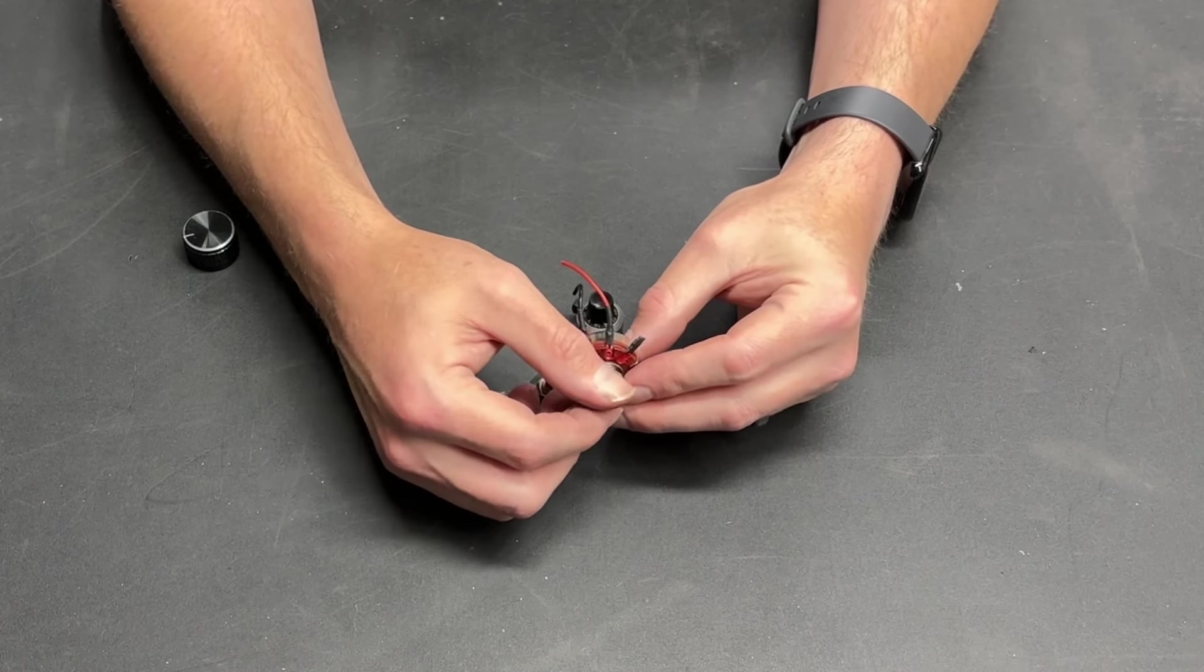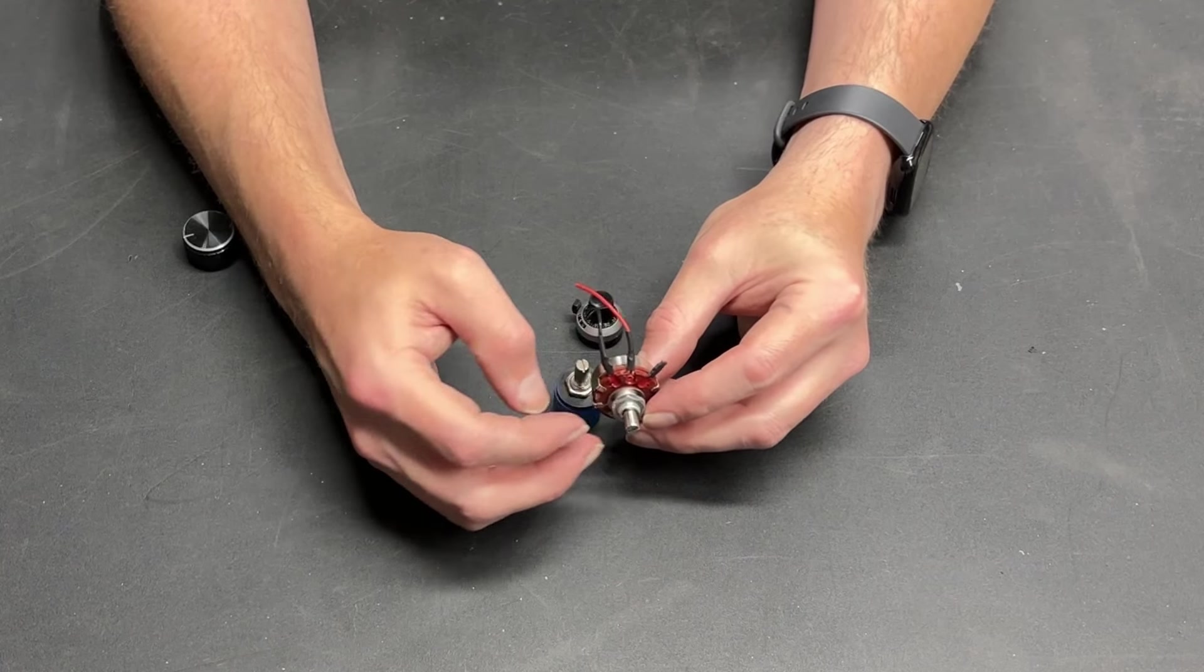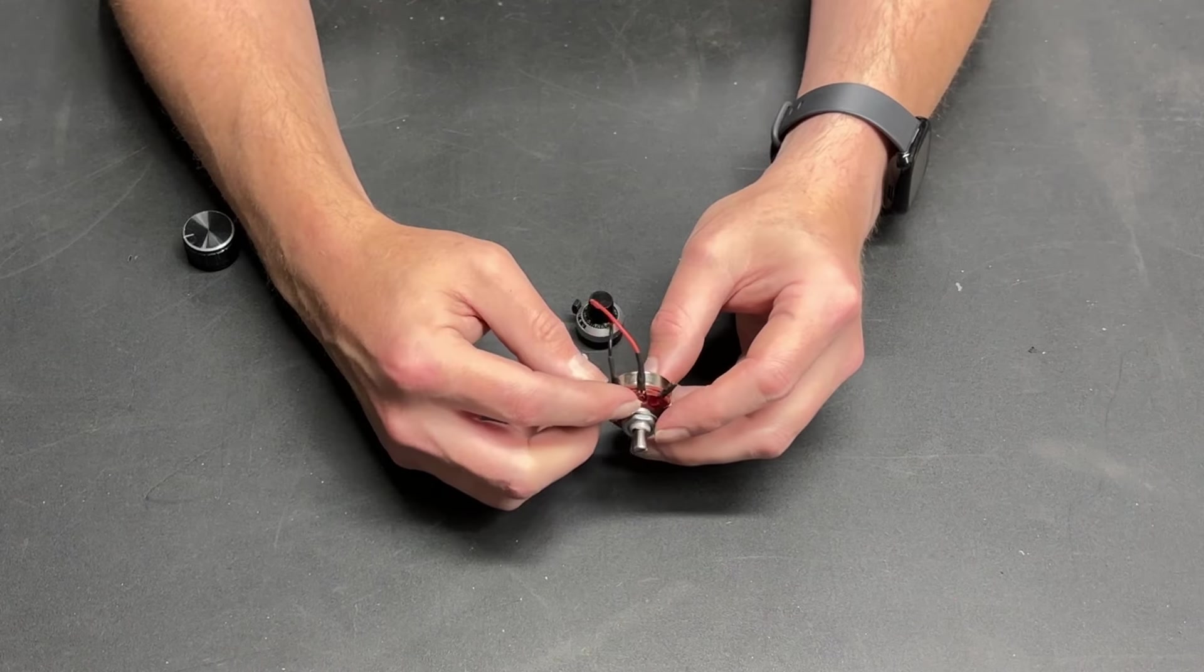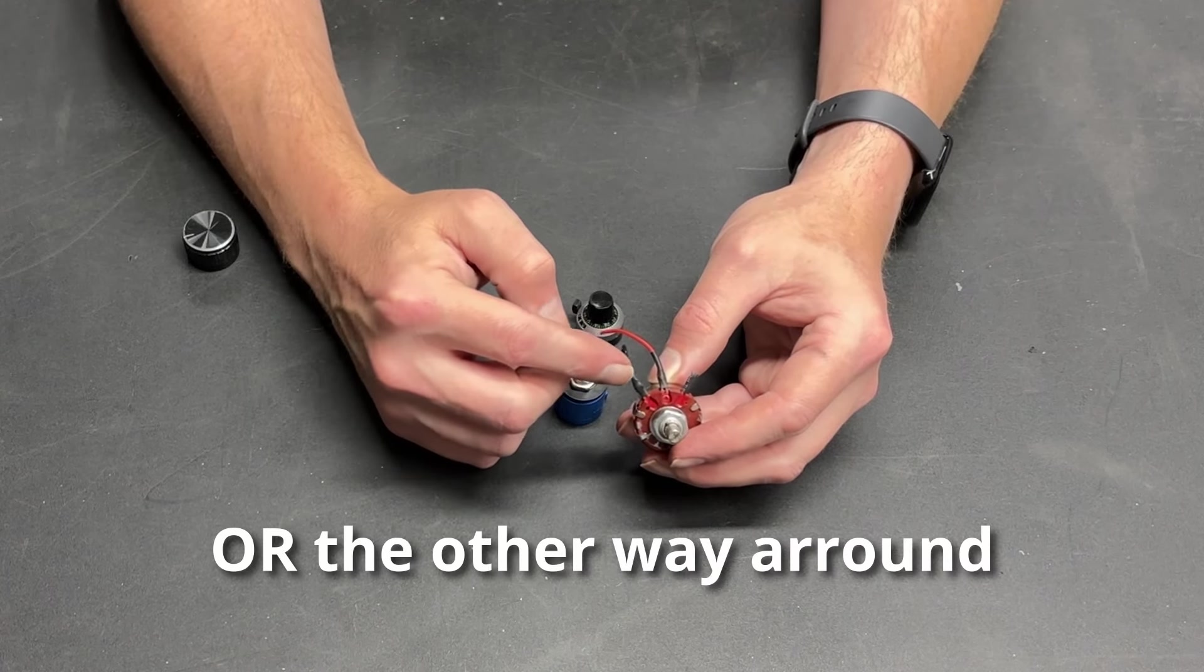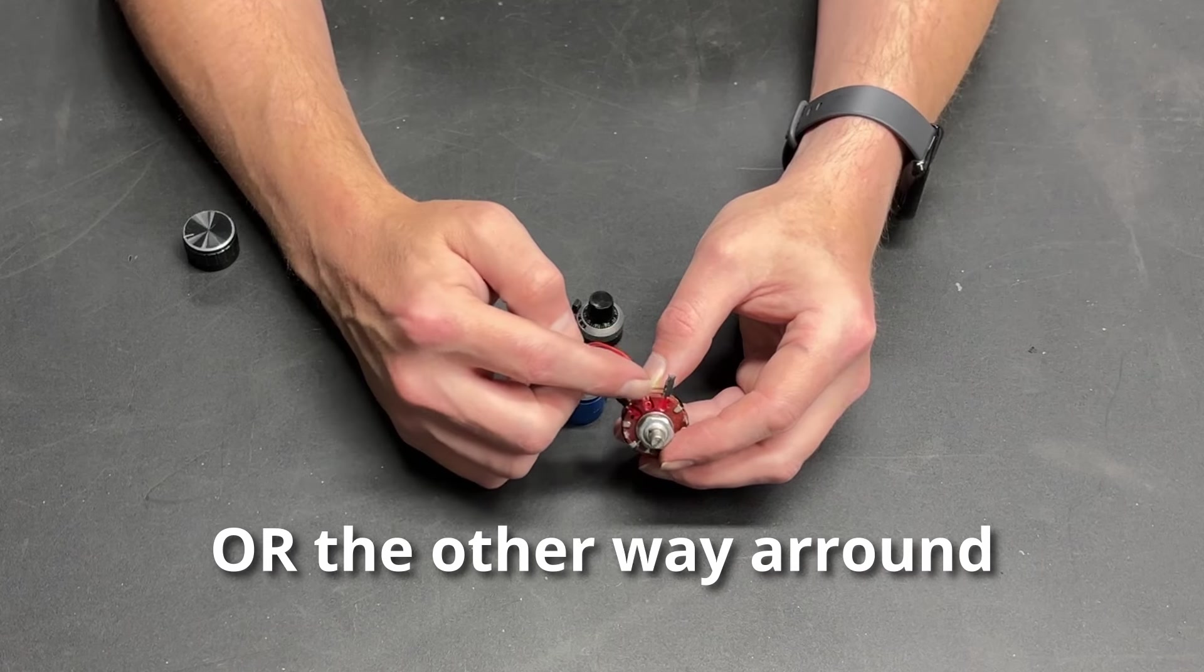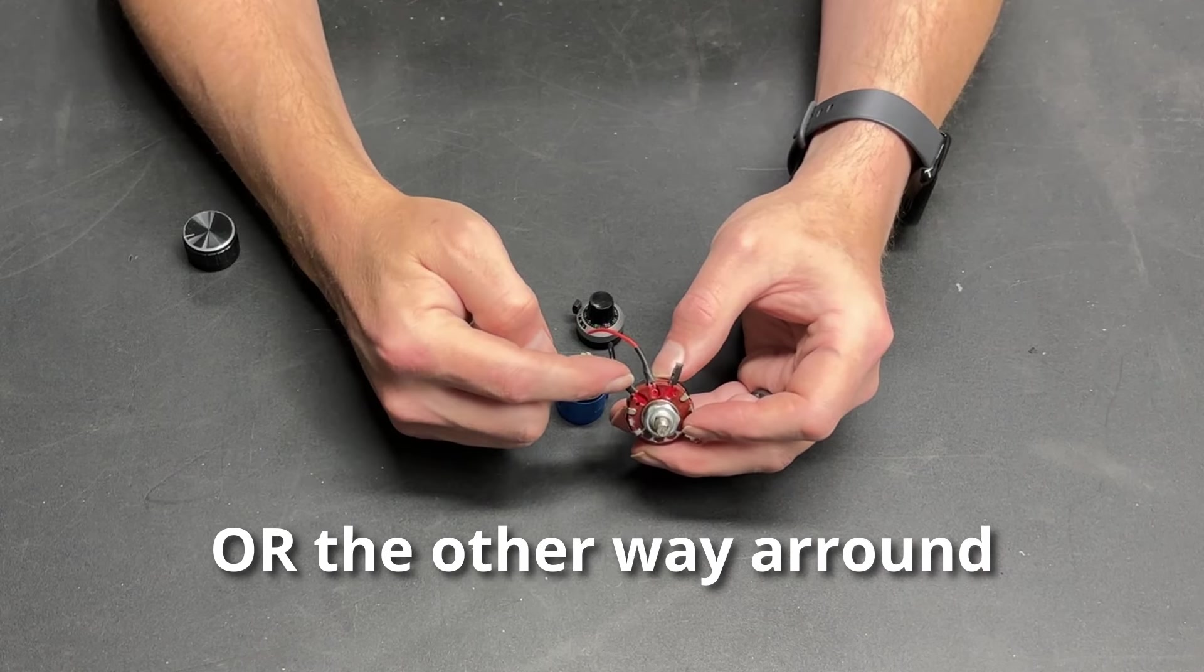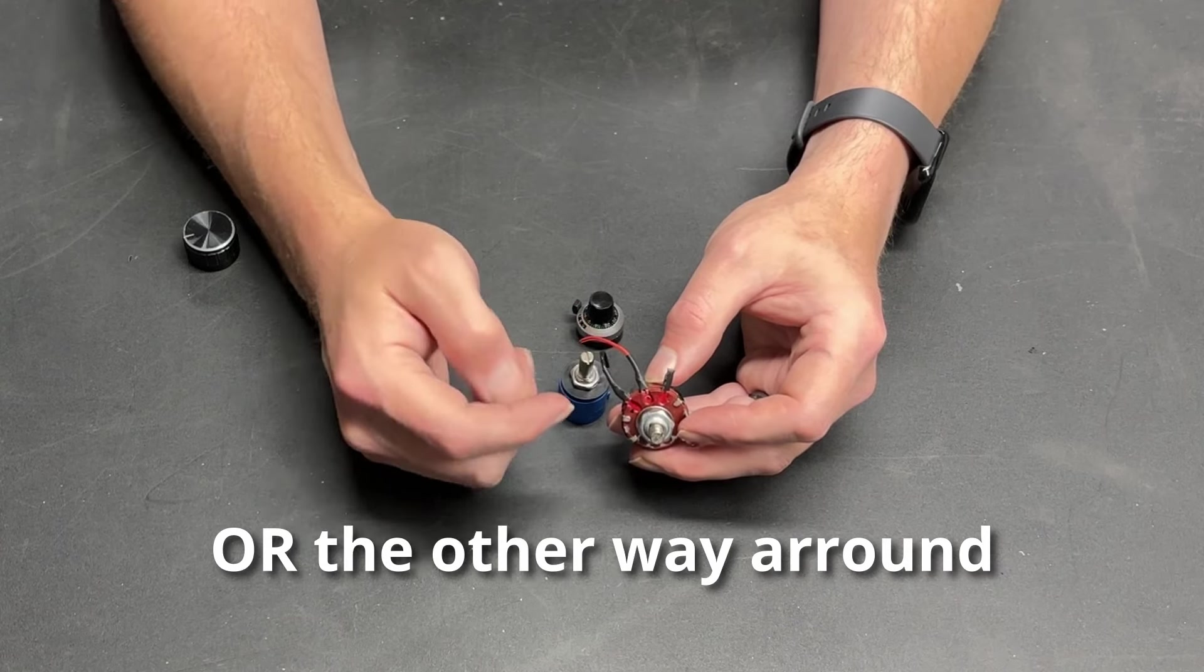So what the high means is when you have it turned all the way down, you're going to have the resistance that the potentiometer is set at. In this case, we have a 150k potentiometer. So there will be 150 ohms worth of resistance between this terminal and this terminal. And there will be basically no resistance between this terminal and this terminal. And as we begin to turn it, the resistance between this terminal and this terminal drops. And the resistance between this terminal and this terminal increases.